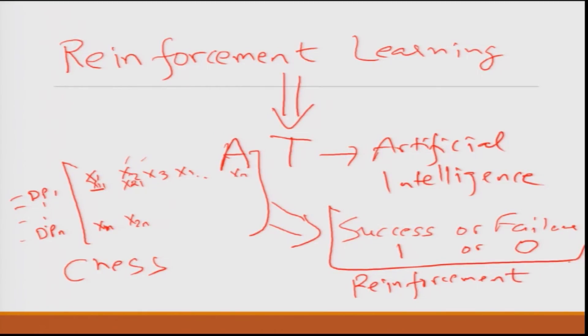This 1 or 0 success or failure is called reinforcement. This comes from some classical theories of behavioral sciences that emerged in early 20th century, late 19th century. If you would have heard about Pavlov's experiment and many such experiments, the whole idea was to give somebody a final feedback of success or failure and then hope that the organism, the human or even animals, they adapt, they learn, and then they optimize the system to maximize the rate of success.